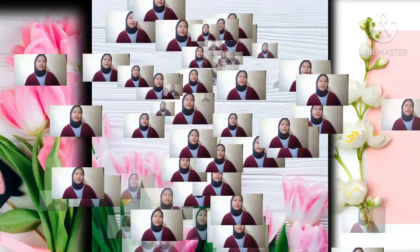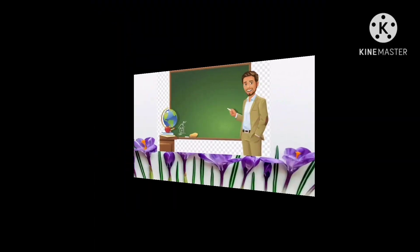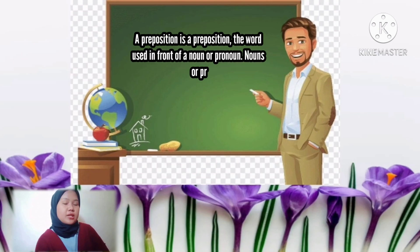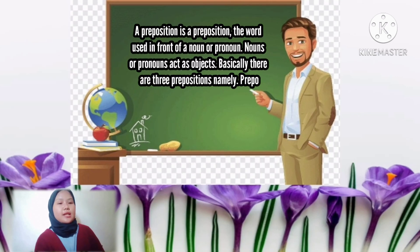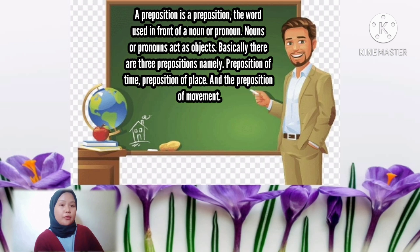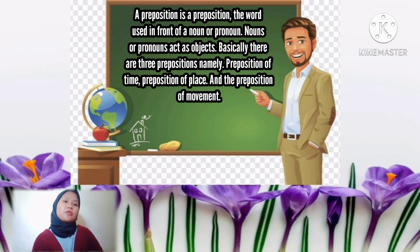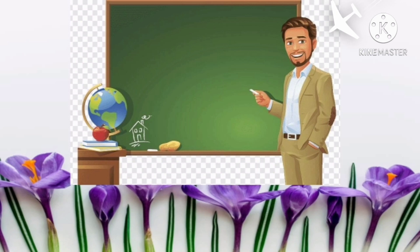Okay, let's start with the understanding. A preposition is a word used in front of a noun or pronoun, which acts as an object. Basically, there are three prepositions: namely, prepositions of time, prepositions of place, and prepositions of movement.